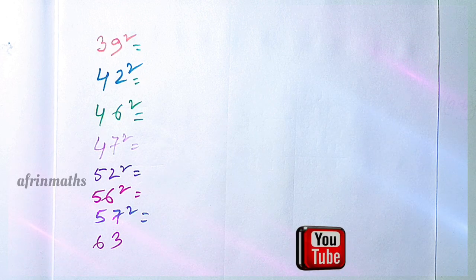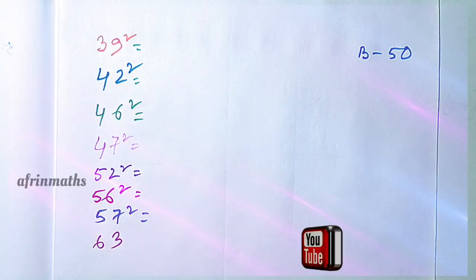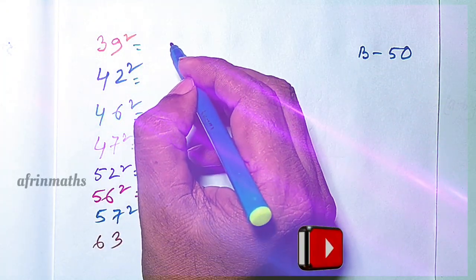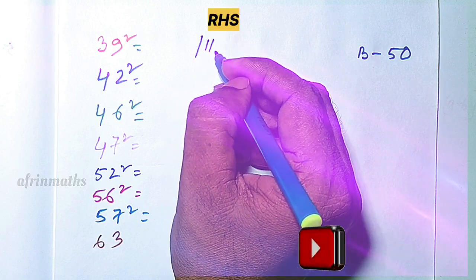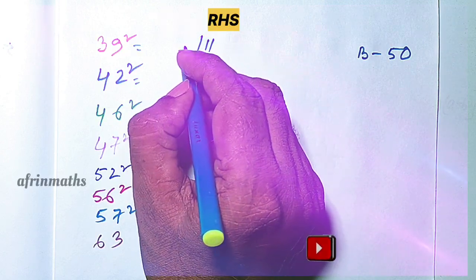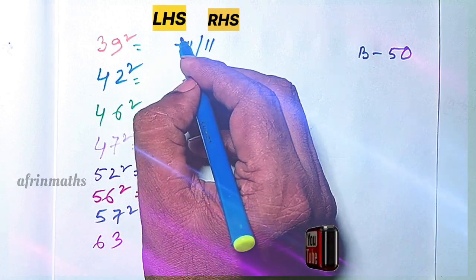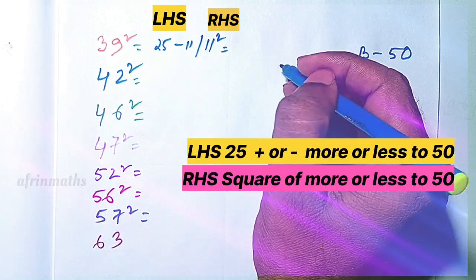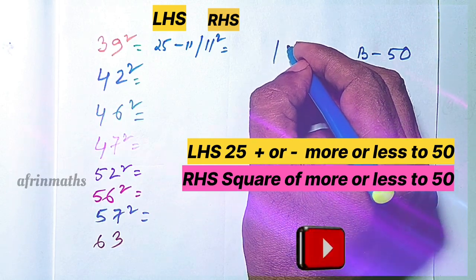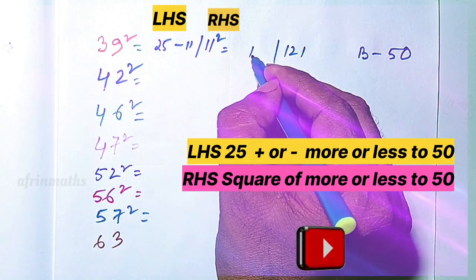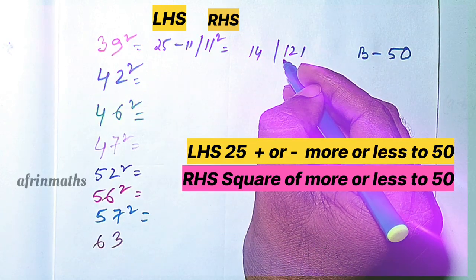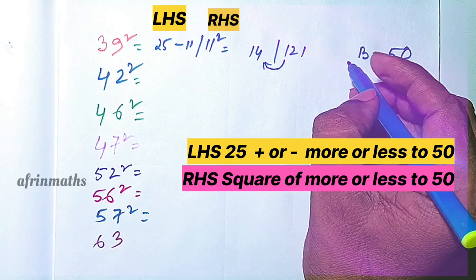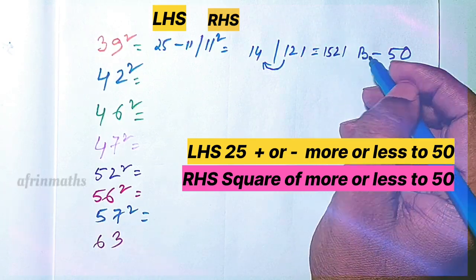Squaring close to 50 — when the base is 50. Let us find out the square of 39. It is 11 away from 50, so we subtract 11 from 25, giving 14. 11 squared is 121. Since we have three digits, we carry the 1, making it 14+1=15, and the answer becomes 1521.